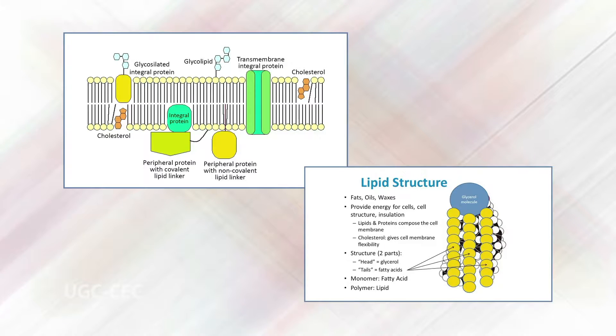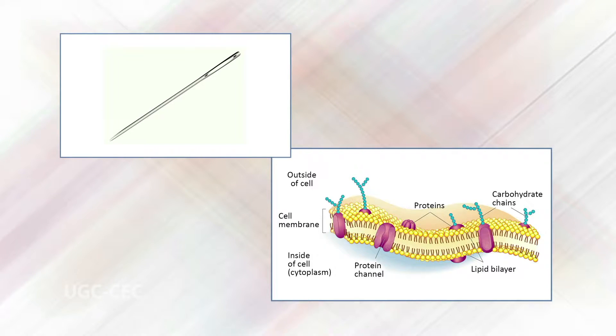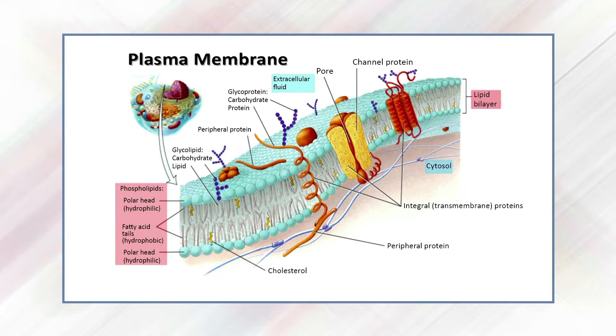The mosaic characteristics of the membrane help the plasma membrane remain fluid. The integral proteins and lipids exist in the membrane as separate but loosely attached molecules. The membrane is fairly rigid and can burst if penetrated or if a cell takes in too much water. However, because of its mosaic nature, a very fine needle can easily penetrate a plasma membrane without causing it to burst — the membrane will flow and self-seal when the needle is extracted.